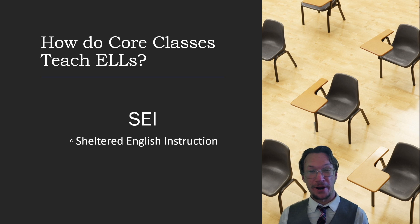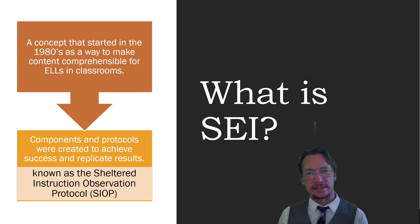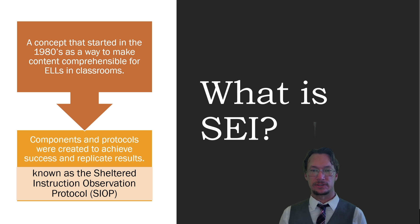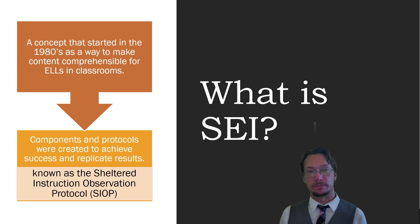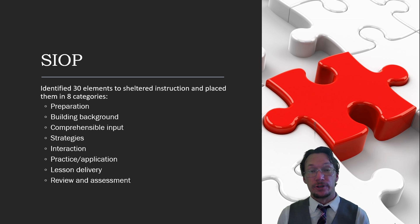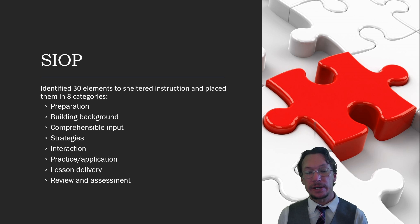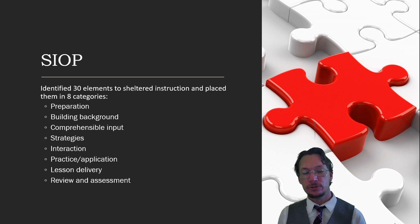The answer is the other SEI — Sheltered English Instruction. SEI is a concept that started in the 1980s and was meant to make content comprehensible for the ELL student. Over time, SEI evolved and components were created that could be replicated and show consistent results. These protocols became known as the Sheltered Instruction Observation Protocol, or SIOP. SIOP is composed of 30 different elements grouped into eight categories: Preparation, Building Background, Comprehensible Input, Strategies, Interaction, Practice, Application, Lesson Delivery, and Review and Assessment.